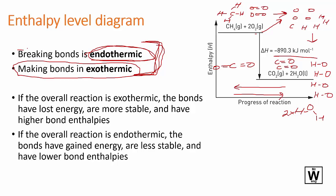Because the bonds that have formed are more stable than the bonds that were broken, more energy has gone into the system. If the overall reaction is exothermic, the bonds have lost energy, they are more stable and have higher bond enthalpies. It is harder to break these bonds, they're more stable.